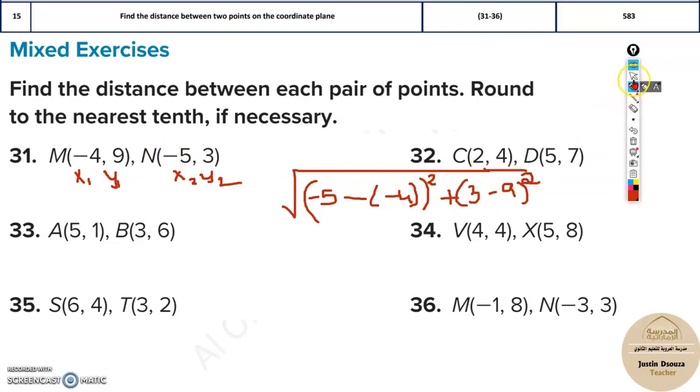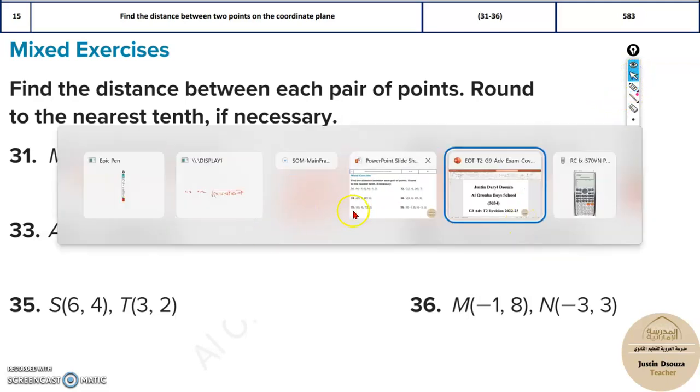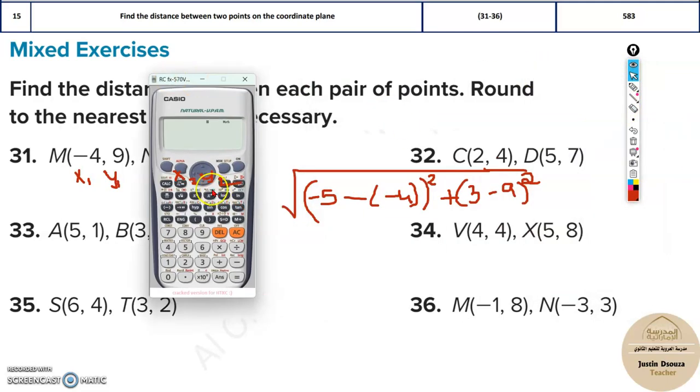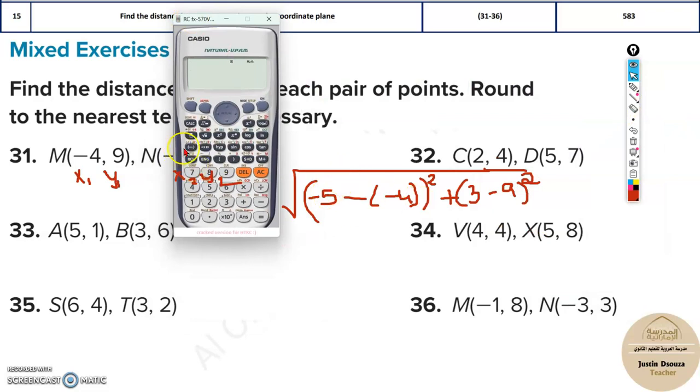All you need to do is just put this thing in the calculator. So, you will have the square root. Or you can even simplify it. It'll be plus 4 minus 1. Minus 5 would be minus 1. Over here, it'll be minus 6. Square them. Take the square root. That's fine. But to save time over here, I'll just put in the calculator.